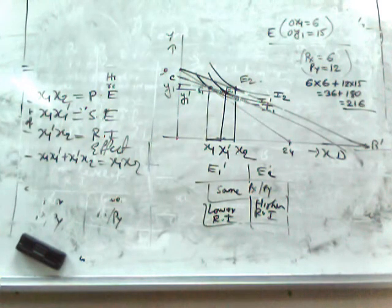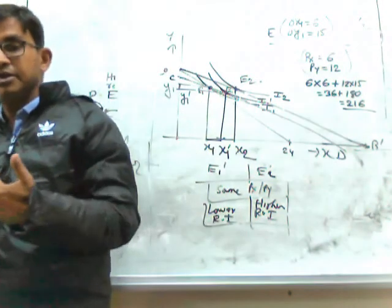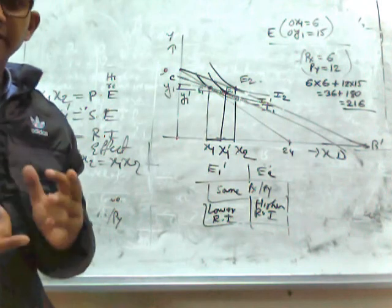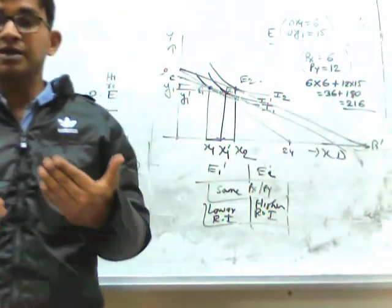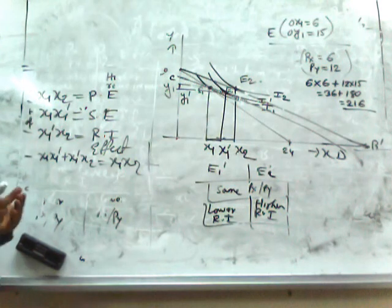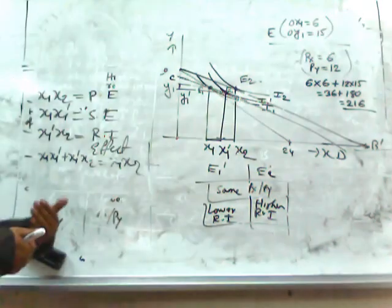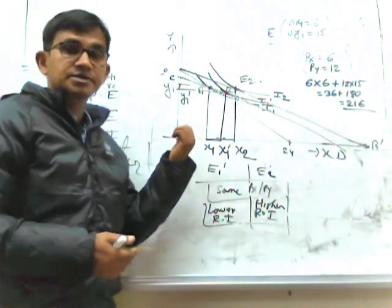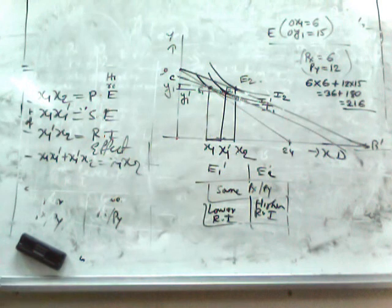There is a basic difference between Hicks and Slutsky methods. The Slutsky method is more realistic because in the Hicksian method, real income is represented by the level of utility, which is a psychological concept. In the Slutsky method, real income is represented by the initial equilibrium commodity basket, which is more realistic. Second, in the Hicksian method there is no utility gain due to the substitution effect, but in the Slutsky method the consumer does experience a utility gain from the substitution effect, moving to a higher indifference curve. These are the basic differences between the Hicks and Slutsky methods.